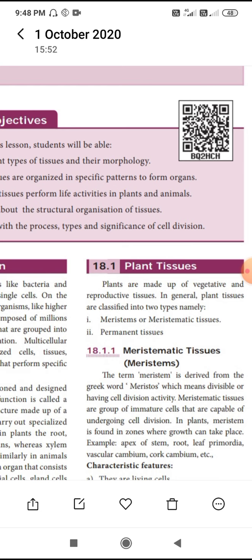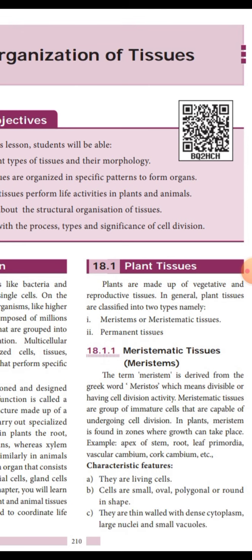Generally, plant tissue is classified into two types: one is called meristematic tissue and another is called permanent tissue. The word meristematic is derived from the Greek word 'meristos', meaning 'divisible'. So meristematic tissue is characterized by continuously occurring cell division.